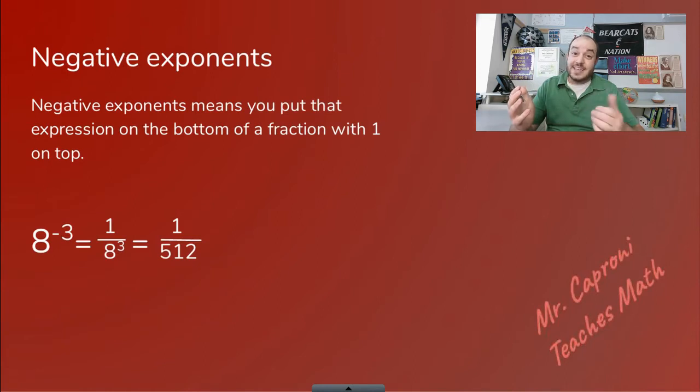The last rule we're going to look at is negative exponents. If you have a negative exponent like what we see here, eight to the negative three, that just means that you take that whole expression and move it to the bottom of a fraction with one on top. So when we see eight to the negative third power, that really means one over eight to the third power. Now in the calculator, I can put in eight to the third power and that gives me 512. So that means that this expression is actually equivalent to one over 512.